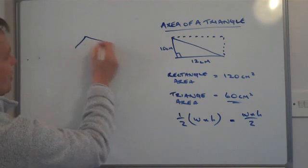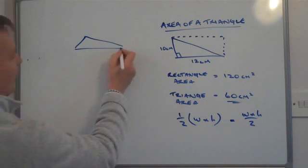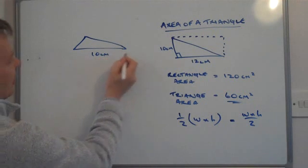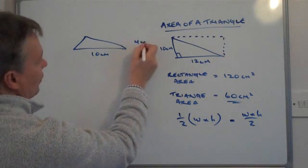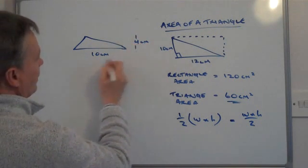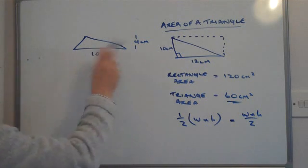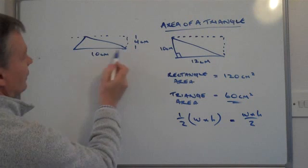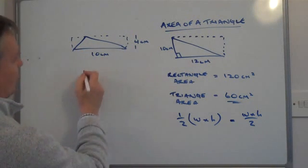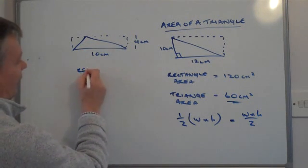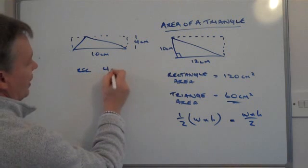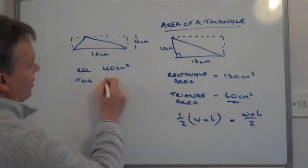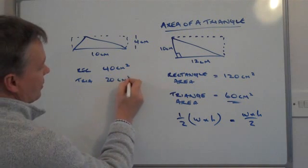So let's say it's a scalene triangle, where the bottom base is 10 centimeters and the height is 4 centimeters. The area of that would be, working as a rectangle, 10 times 4, so the rectangle area is 40 centimeters squared. Therefore, the triangle area is 20 centimeters squared.